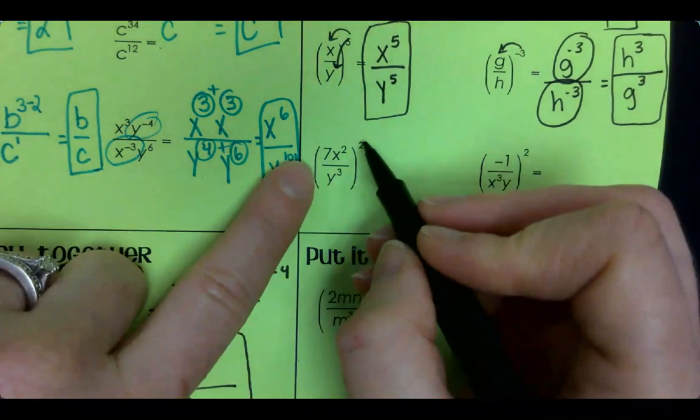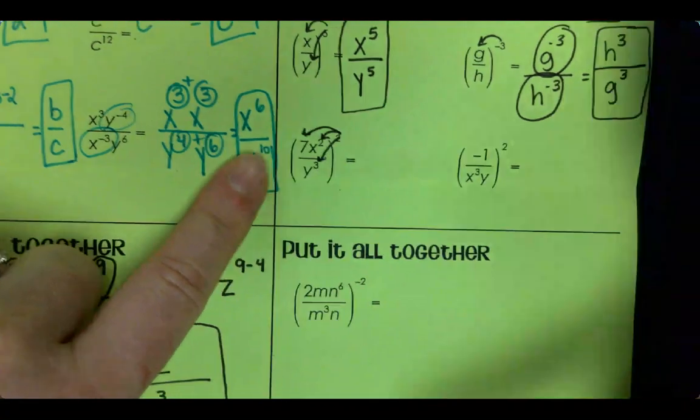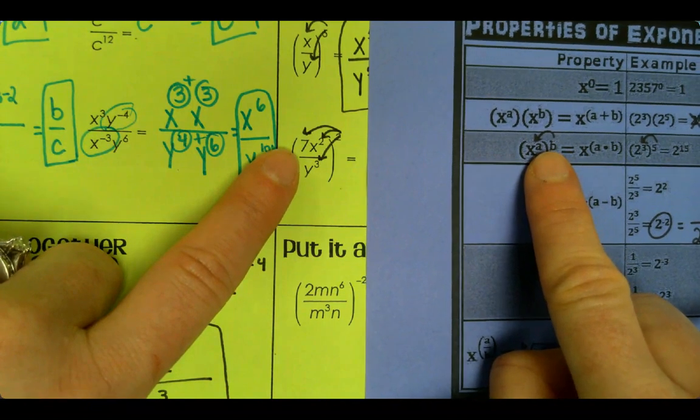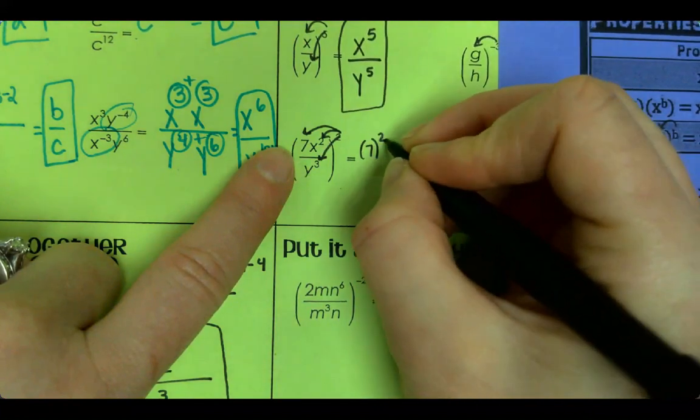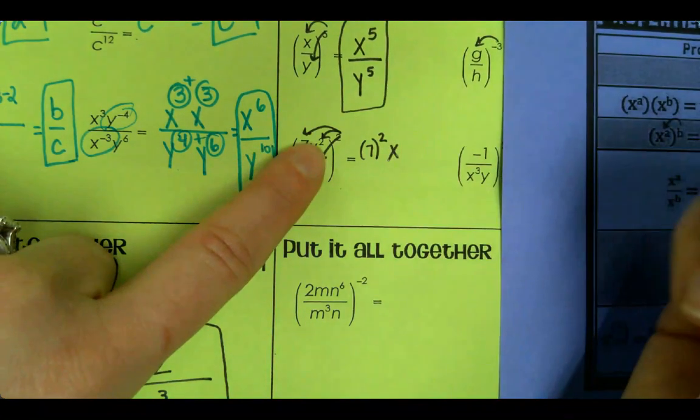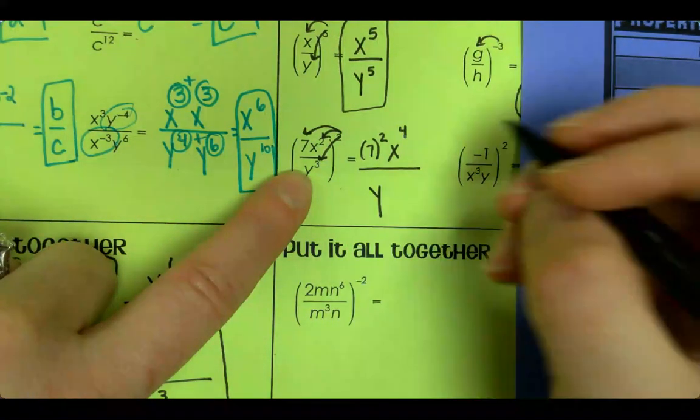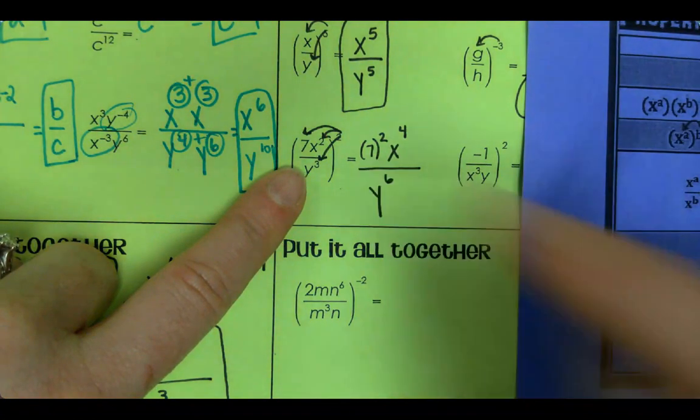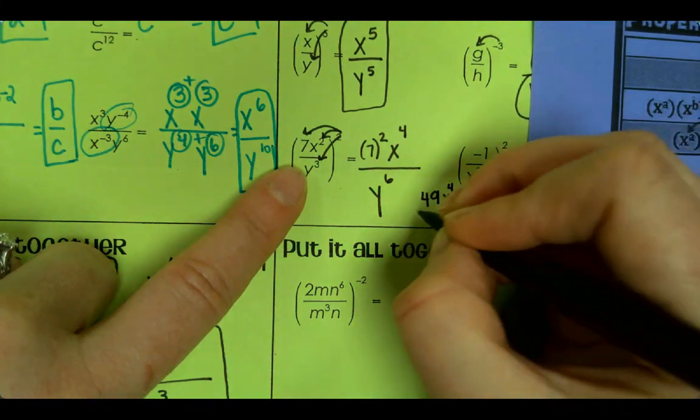Alright, next one. You have to send it in to every term top and bottom. And just like this rule says, you're going to multiply exponents. So we just have a 7 though. So it's going to be 7 squared on top, and then x 2 times 2 over y 3 times 2. The only thing that you can simplify is the 7 squared. I'm just going to rewrite it down here. 49 x⁴ over y⁶. So we didn't have to do any kind of simplifying.